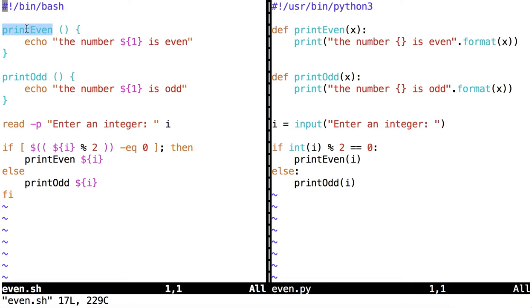Now functions may require arguments to run. You can see this in the bash syntax through the expansion of argument number one here in print even and print odd, and over here in Python where in the definition of the function we specify that we are looking for one argument called x.